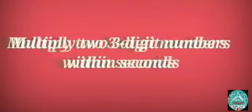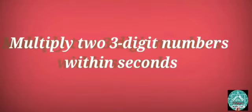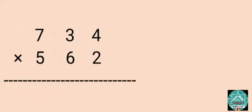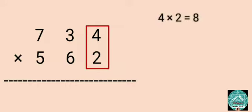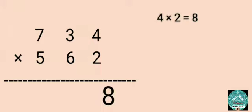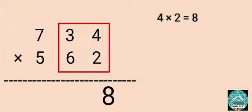How to multiply two three-digit numbers within seconds. Multiply 734 by 562. Step 1: Multiply 4 by 2. Write 8 in the 1s column.